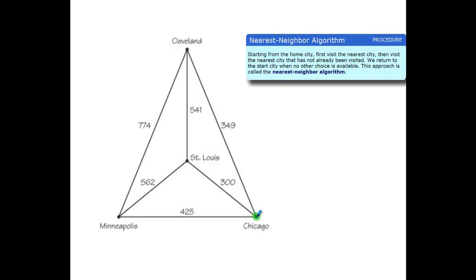I look at the closest one, which is St. Louis. Once I'm at St. Louis, then I'm going to consider the two remaining cities. The two remaining cities are Cleveland, which is 541, or Minneapolis, which is 562. The closest one is Cleveland.